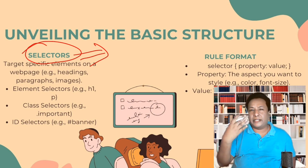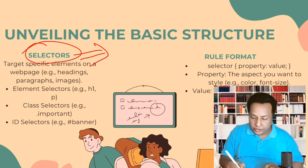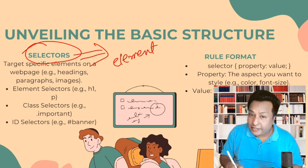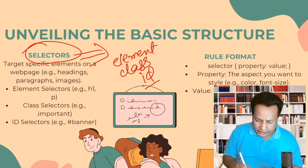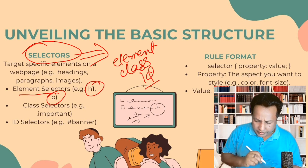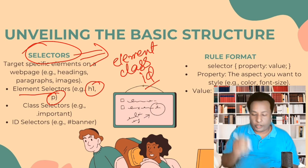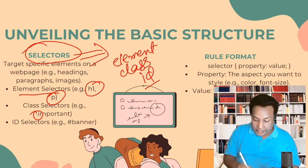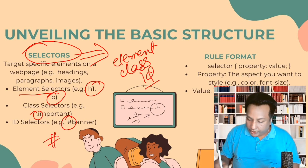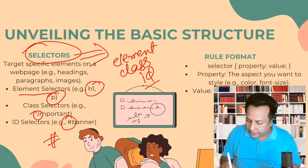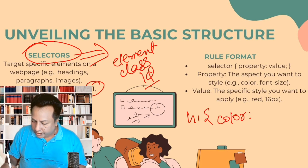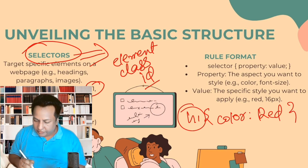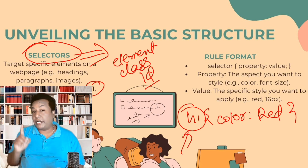If we have a div with an id of 'main', we can use the id selector to select and style that specific div. The element selector can be h1 or p. For the class selector we use a dot — for example, '.important'. For the id selector we use a hash. So if I have h1 and I apply a color property, h1 is the selector.